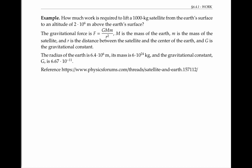Let's look at a physical example. How much work is required to lift a thousand kilogram satellite from the Earth's surface to an altitude of 2 times 10 to the sixth meters above the Earth's surface? We're given that the gravitational force is f equals G times capital M times lowercase m divided by r squared, where M is the mass of the Earth, lowercase m is the mass of the satellite, r is the distance between the satellite and the center of the Earth, and G is the gravitational constant. We're also given numbers for the radius of the Earth, the mass of the Earth, and the gravitational constant.